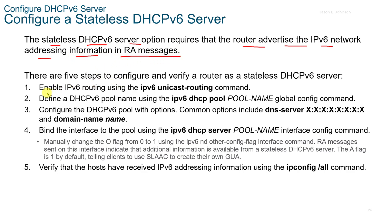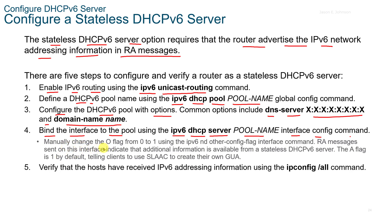There are five steps to configure a stateless DHCPv6 server. First, enable V6 routing using the IPv6 unicast-routing command. Then define a DHCPv6 pool using the IPv6 DHCP pool command with the pool name in global config. Configure the V6 pool with options — common options include DNS server and domain name. Then bind the interface to the pool using the IPv6 DHCP server command with the pool name in interface config. You can manually change the O flag from 0 to 1 using the IPv6 ND other-config-flag interface command. The A flag is 1 by default, telling clients to use SLAAC to create their own GUA.